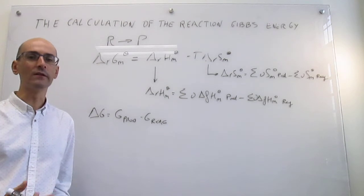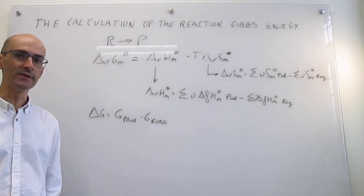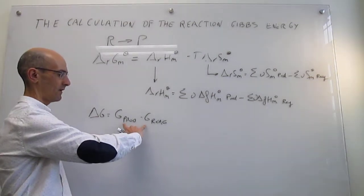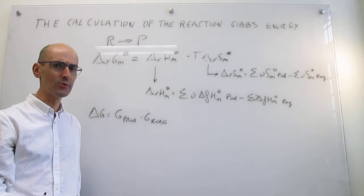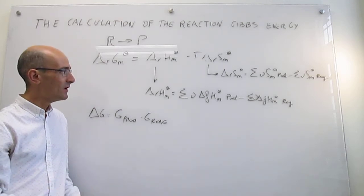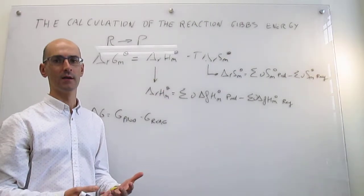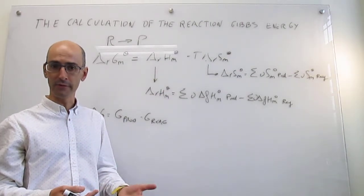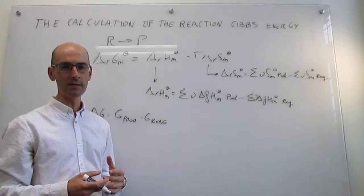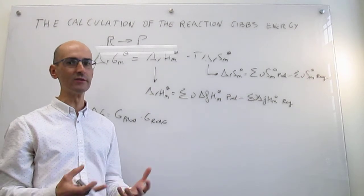Well, if Gibbs energy is a state function, that should work. But we have to be deliberate in determining what these values are — how do we measure the Gibbs energy of products and reagents? Notice that for enthalpy and entropy, we have two different ways to define these measures for individual substances.